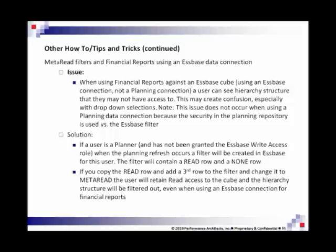There are two ways to solve this problem. One uses a planning connection, though sometimes that's not advisable. The other way is to modify the filter in Essbase and add a row to it. There are three types of filters: read, write, none, and meta-read. What meta-read does is you take the read row, copy it, and change it to meta-read. That'll preserve the read access but filter the hierarchical structure — no matter what you look at, whether you're in the native Excel add-in member selection or SmartView member selection, it'll be filtered out and you won't see that hierarchical structure.